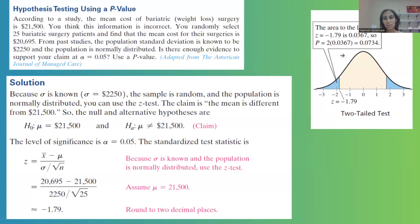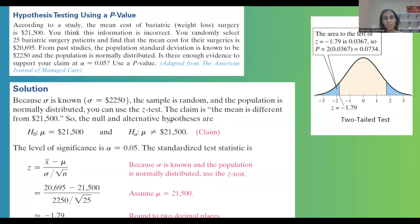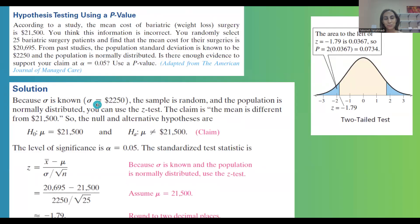Let's take a look at the solution. First of all, since sigma is given to you from the question, the population standard deviation is $2,250. The sample is random and the population is normally distributed, so you can basically use Z test.